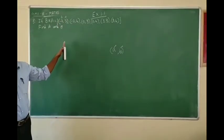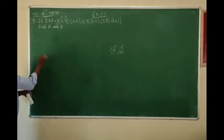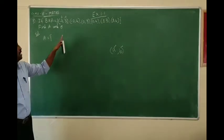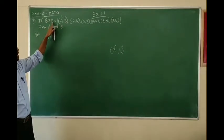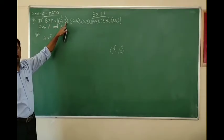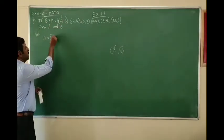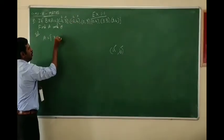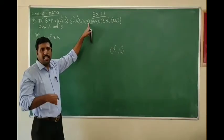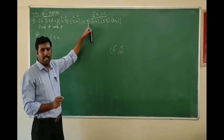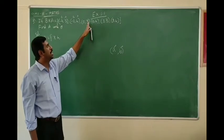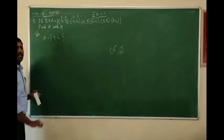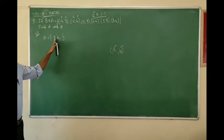So, we can easily find what set A and set B are. Set A is the second element — in B cross A, the second element belongs to A. So we have 3, and then 4. In a set, we do not repeat elements, and 3 and 4 are repeated across pairs, so the set A is equal to {3, 4}.